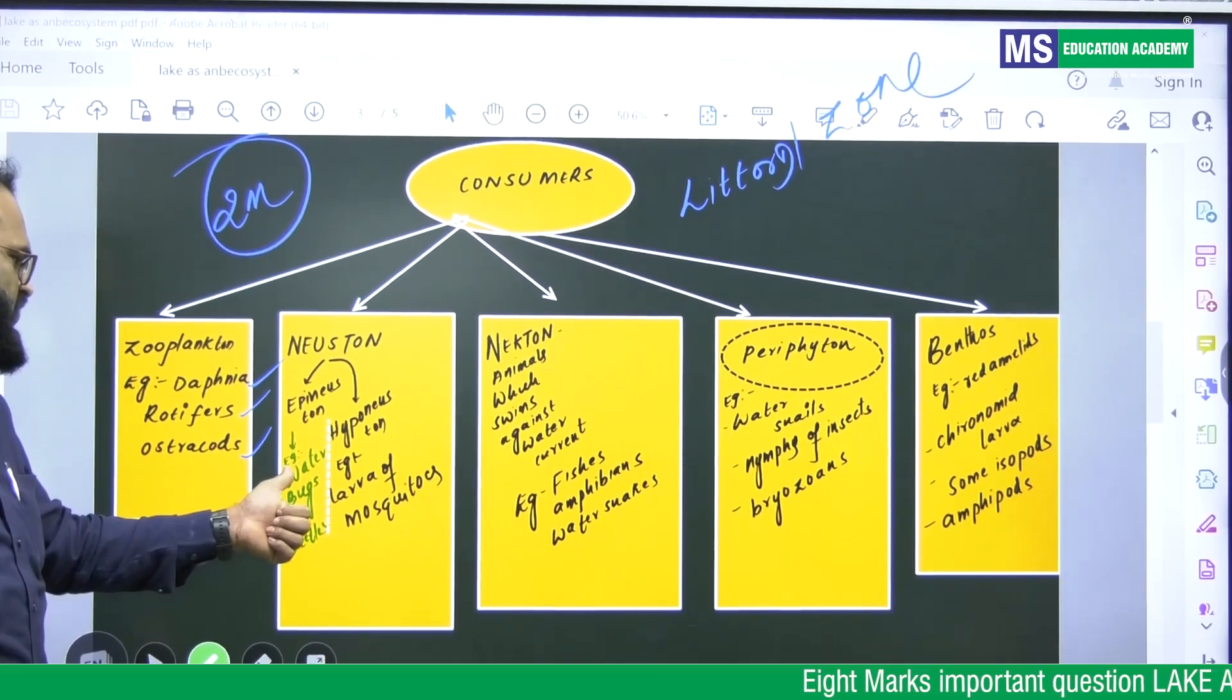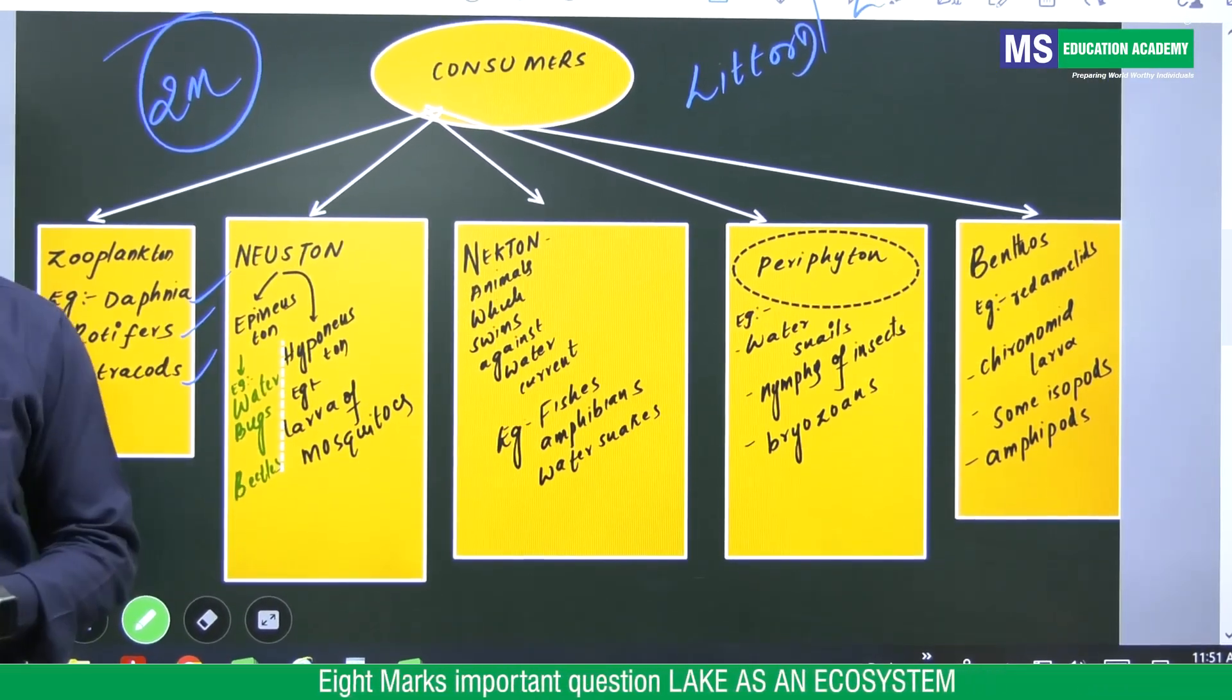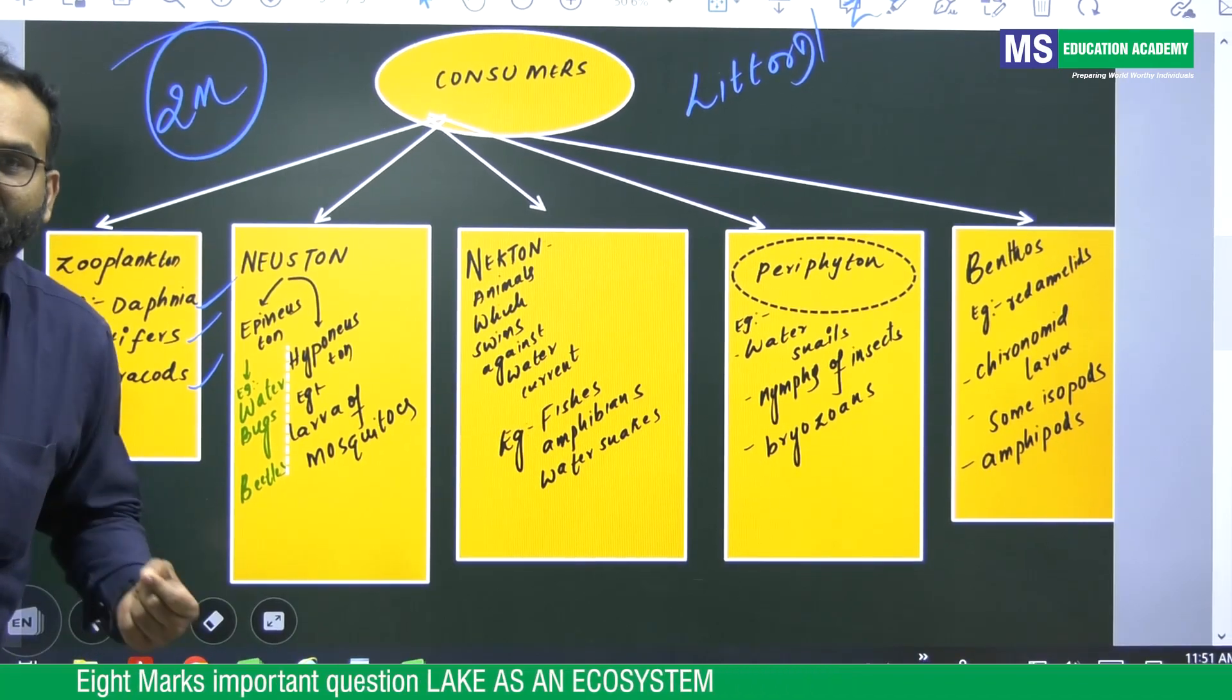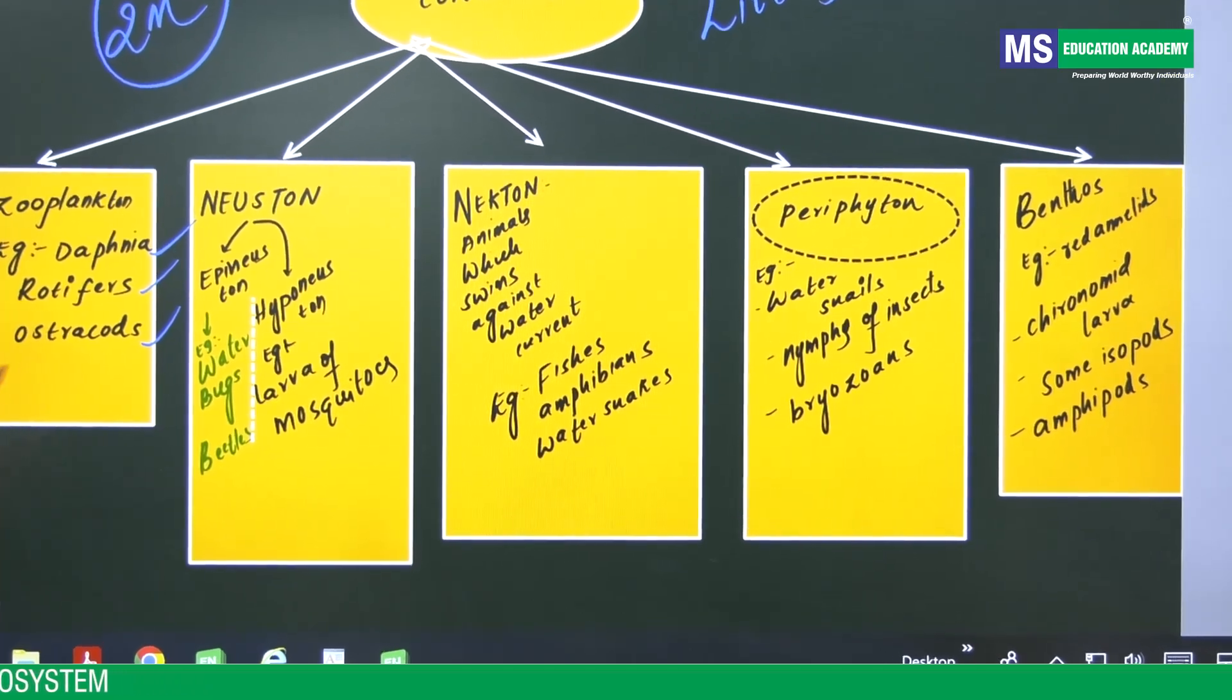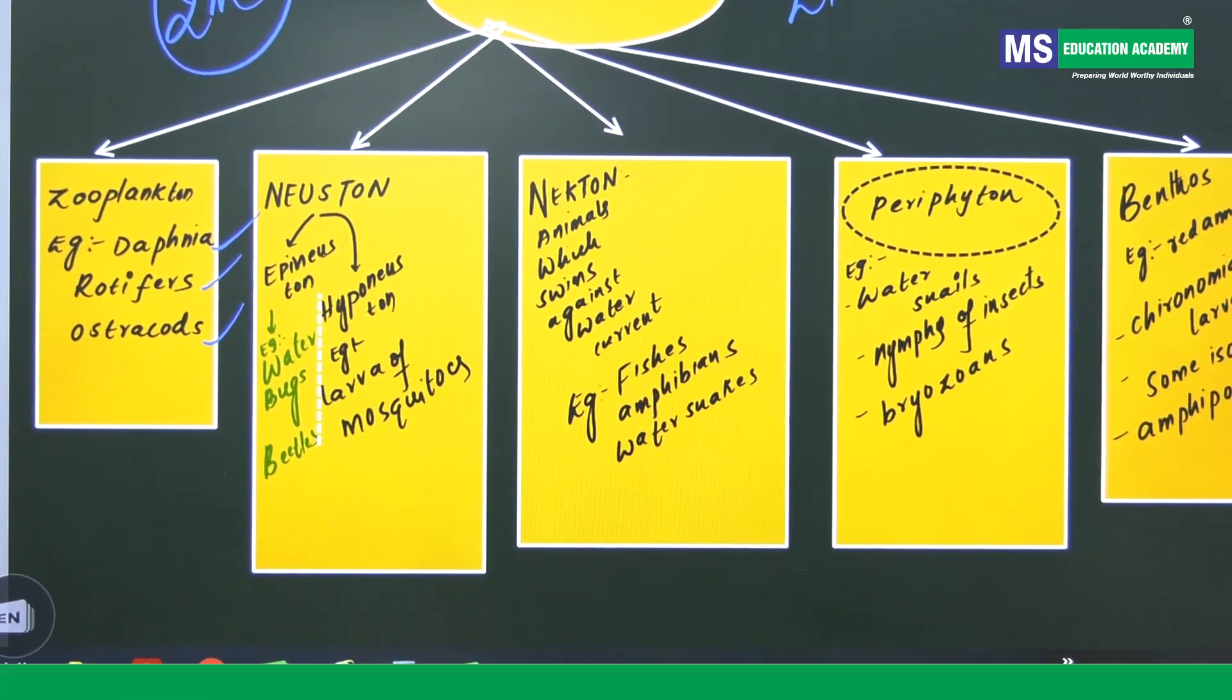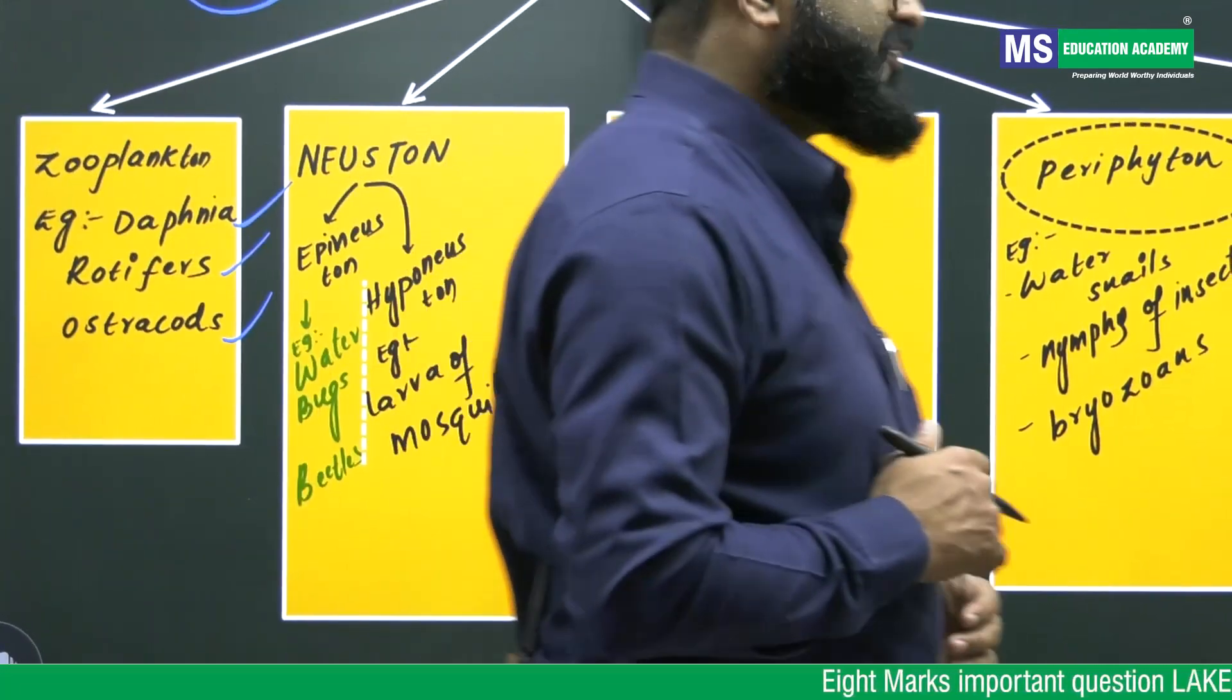Epineuston, Hyponeuston. Animals which lives in the air-water interface. Examples for Epineuston, waterbugs, beetles. Examples for Hyponeuston, larva of mosquitoes.